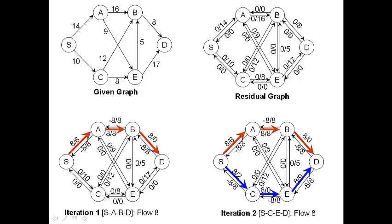The first step is to draw the residual graph, where for every edge you have here, you have an edge that indicates the flow sent on that edge so far and the available capacity. For the edge from S to A, the available capacity is 14 and nothing has been sent yet, so it's 0/14. You also have a back edge — initially the flow and available capacity on the back edge is 0, 0. Similarly, from A to B it is 0/16, and from B to A you have a back edge 0, 0.